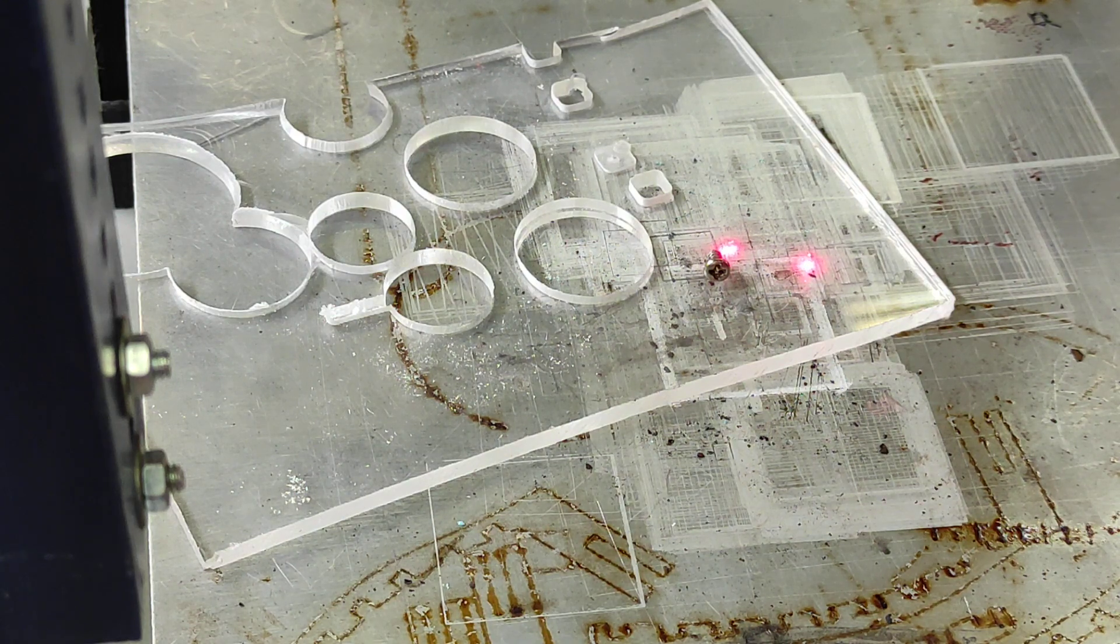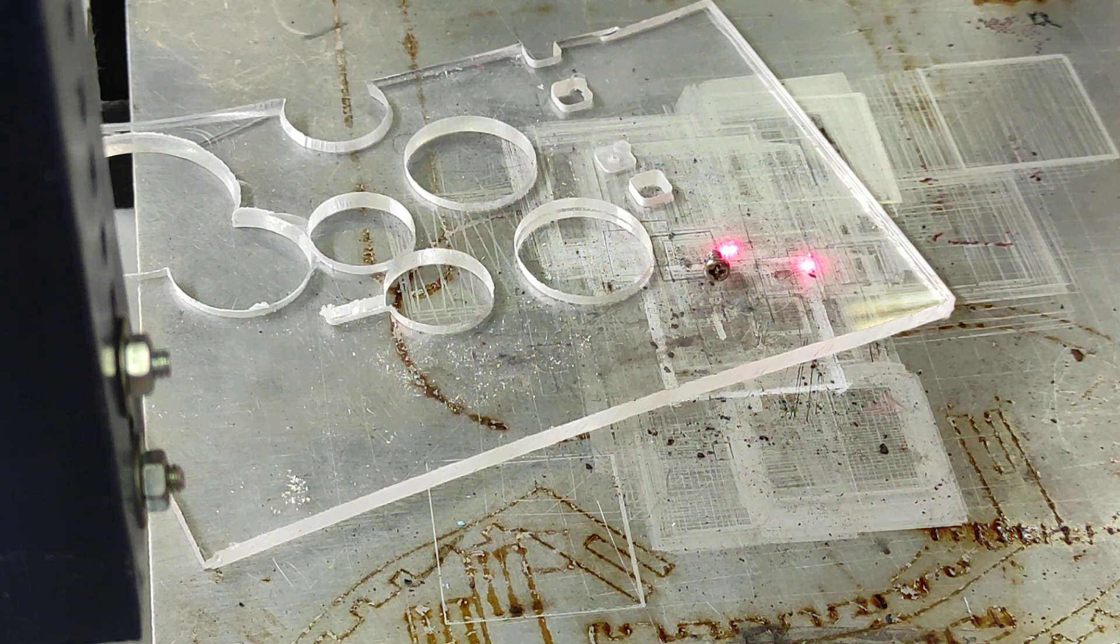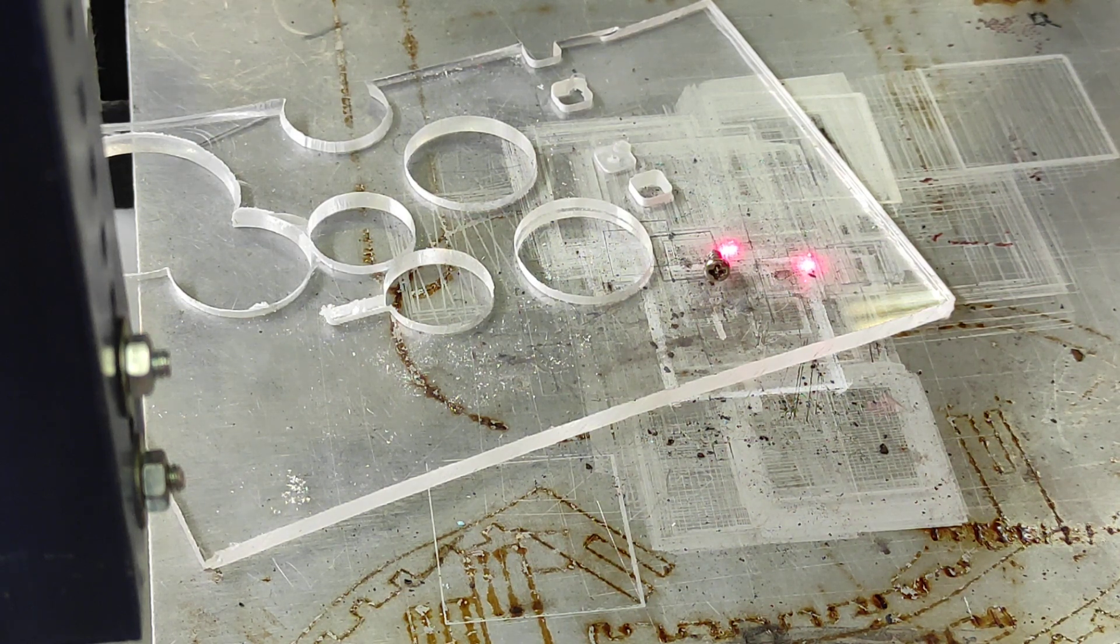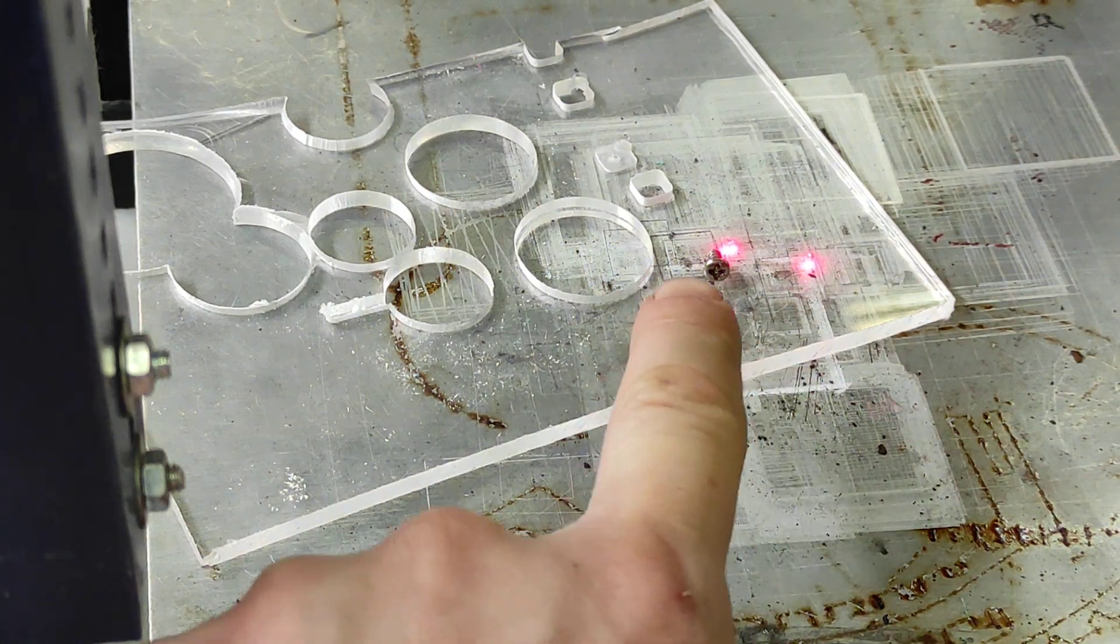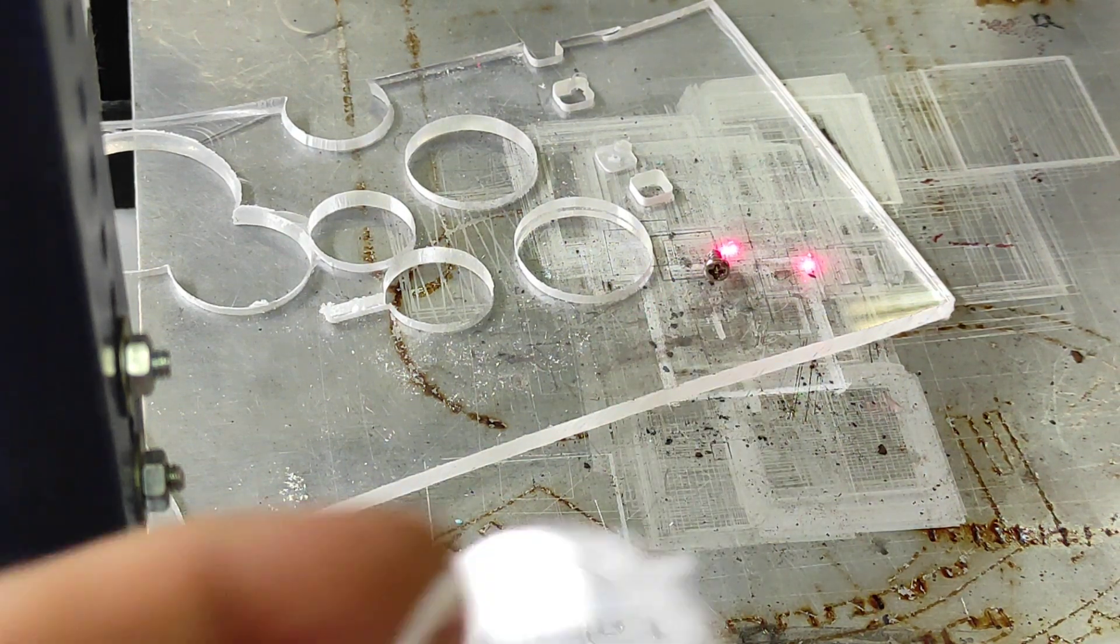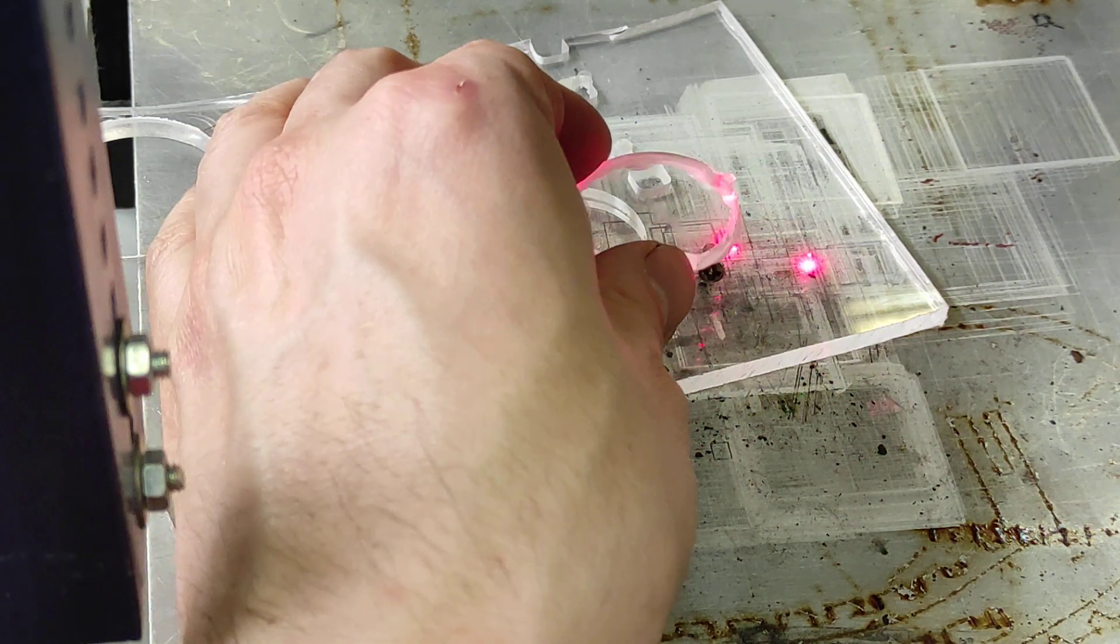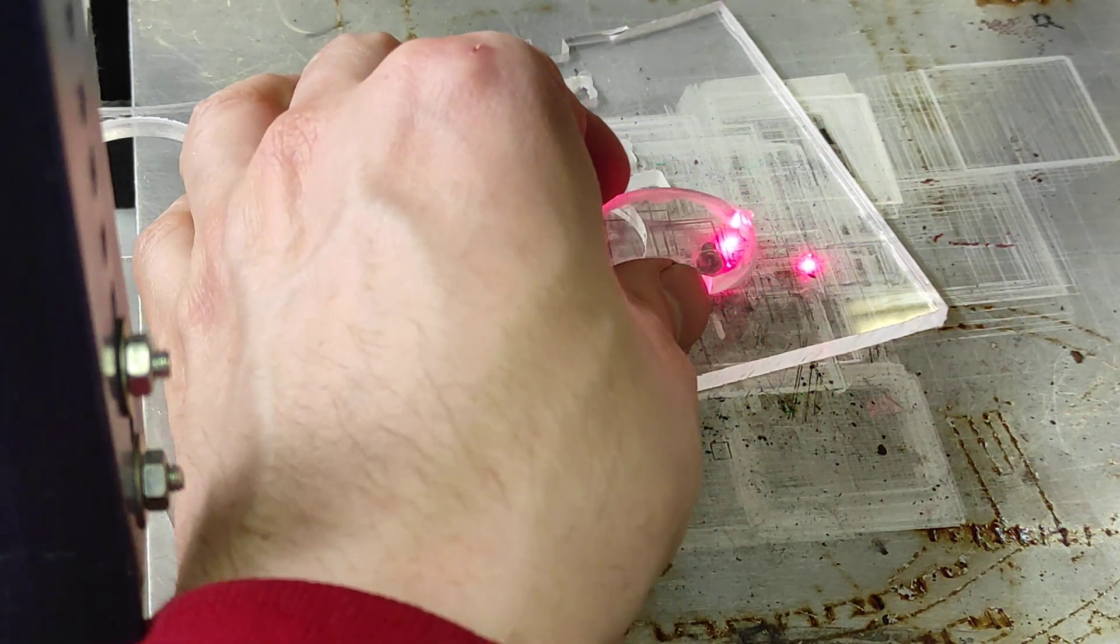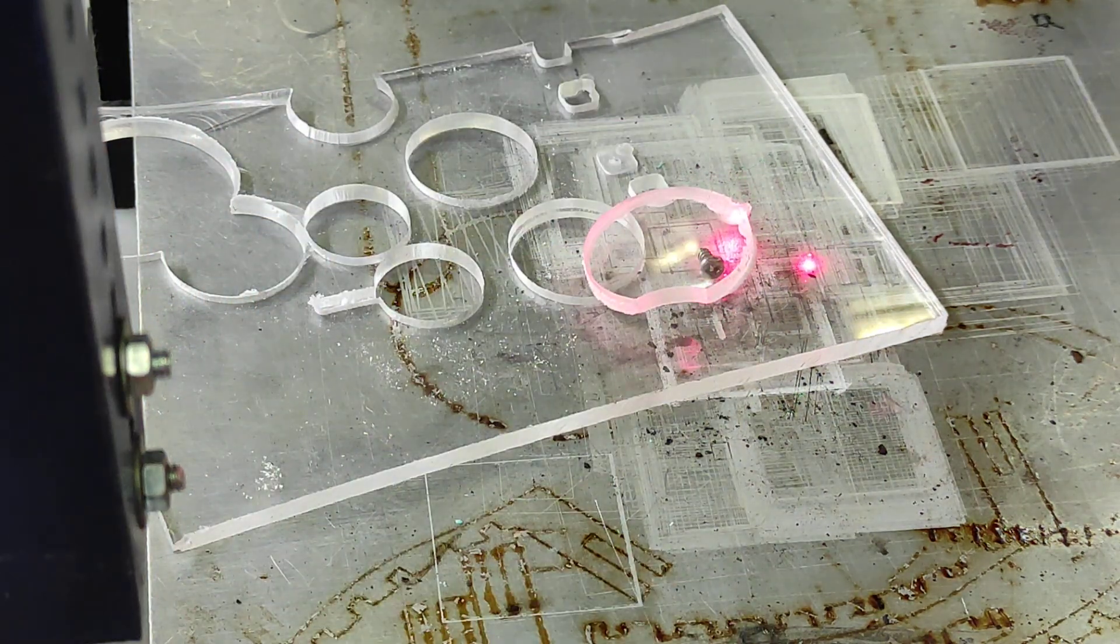The good thing about acrylic is that it's fully transparent for visible radiation and 1064 nanometers as well. So we're going to heat up this piece and then put another piece of acrylic on top of it and press.